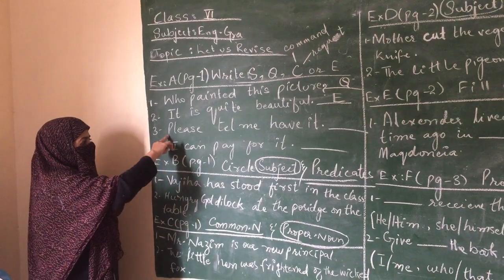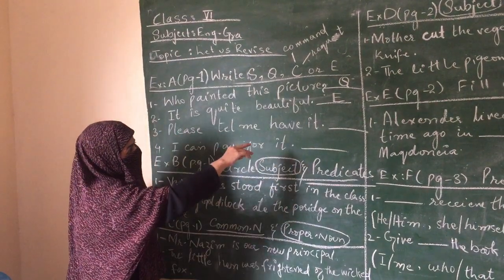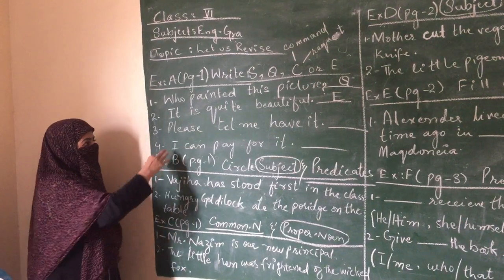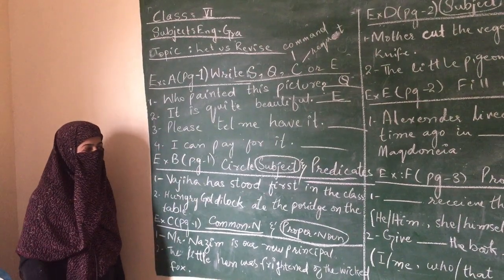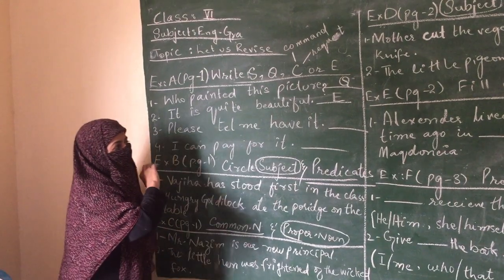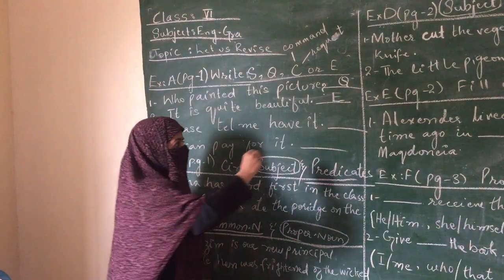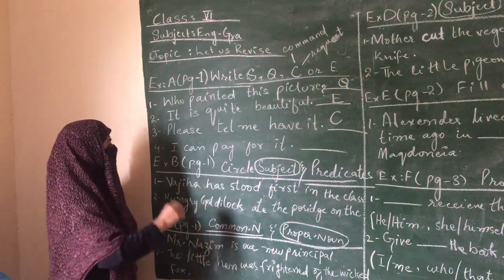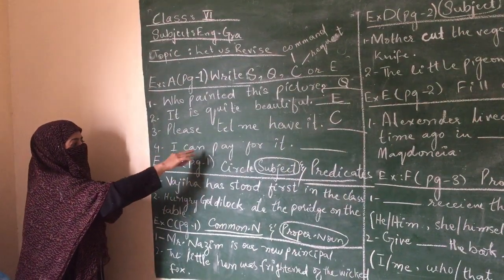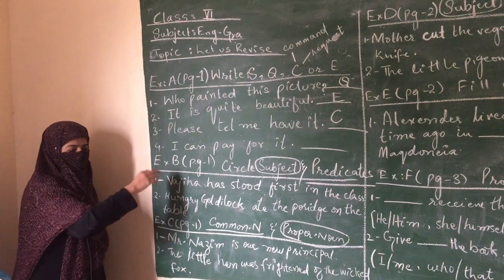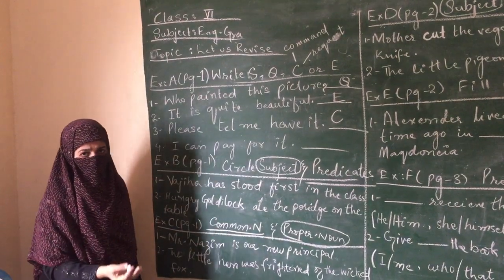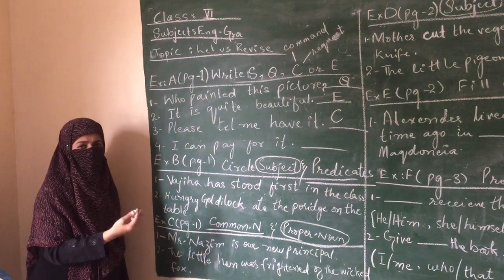Please tell me. Here it is requesting you. That's why we use C. In fourth sentence, I can pay for it. It is a simple sentence. This means I will pay for it, I will give the payment. It is a simple sentence.